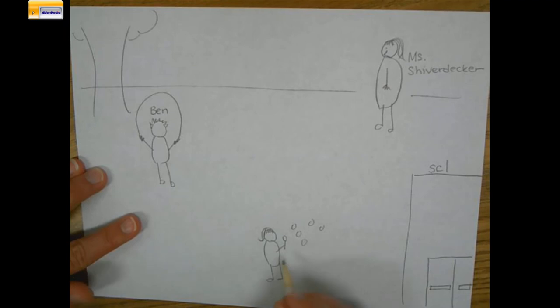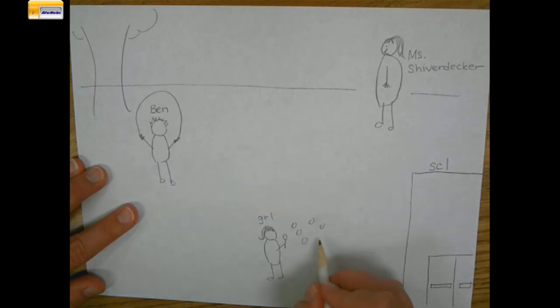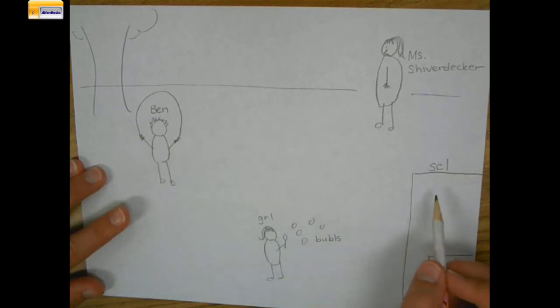And I don't remember this person's name but it's a girl. So maybe I can stretch the word girl: G-E-R-L. And she's blowing bubbles: B-U-B-L-S. So these little words by the parts of my picture are called labels.